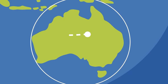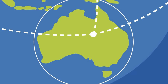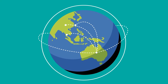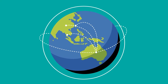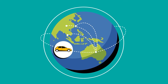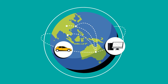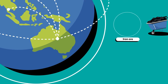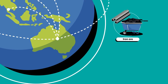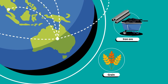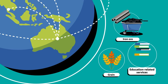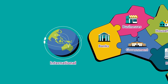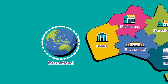Our economy is also linked to economies in other countries. Not all of the things we need and want are produced in Australia, so we have to buy some things from overseas, like cars and computers. And we produce some things that people in other countries want to buy, like iron ore to make steel, grain, or education-related services. This trade with other countries is called our international sector.